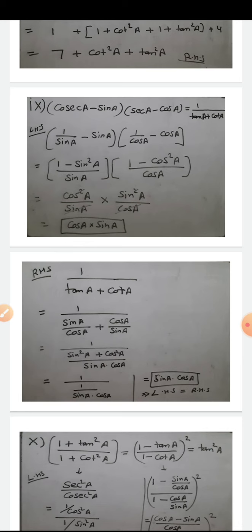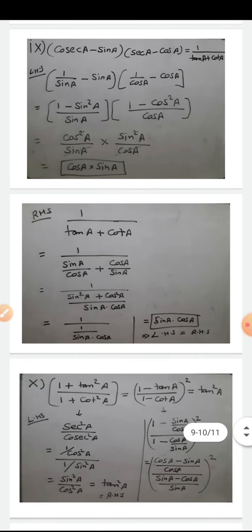So LHS = (cos²A/sin A)·(sin²A/cos A). After cancellation, cos A·cos A cancels with cos A and sin A·sin A cancels with sin A, leaving cos A·sin A. Now for the RHS: 1/(tan A + cot A) = 1/(sin A/cos A + cos A/sin A). Taking LCM in denominator: (sin²A + cos²A)/(sin A·cos A) = 1/(sin A·cos A). So RHS = sin A·cos A. LHS = RHS for Part 9.